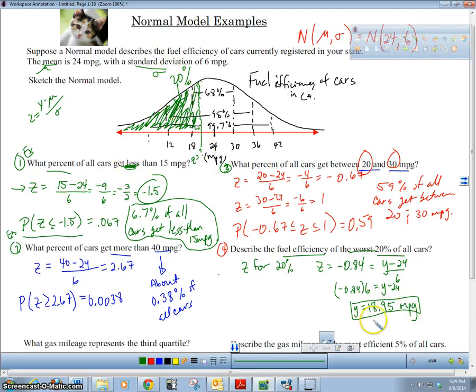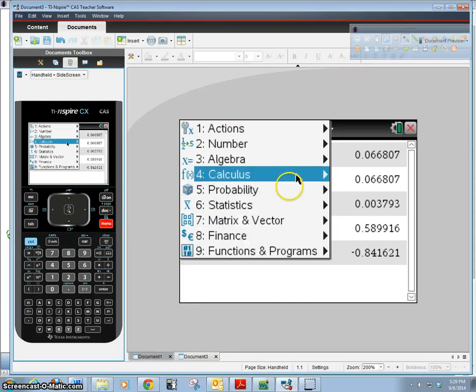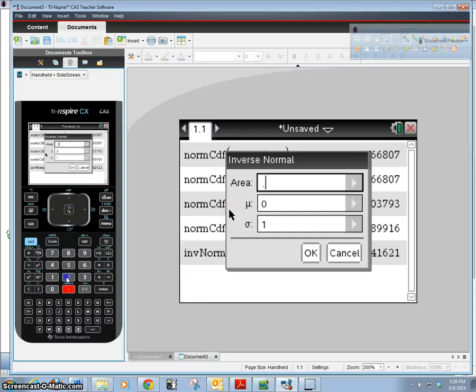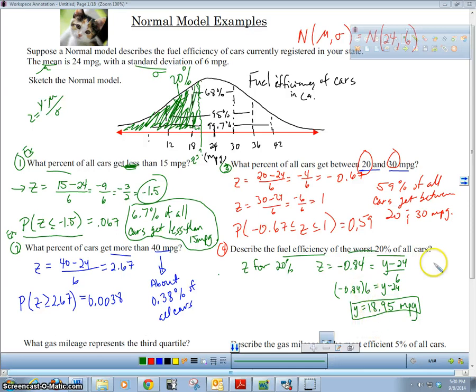You can actually do this in your calculator. If you recall when we did inverse norm, inverse normal, it asked for the area which is point two, and then asked for the mu and sigma. So you could put your mu is 24 and your sigma - I said mu and theta, I meant mu and sigma - your standard deviation was 6, and watch what happens: 18.95, which was what we got. So you could do it all in the calculator right away, which is probably what I'm going to be doing for the next ones.